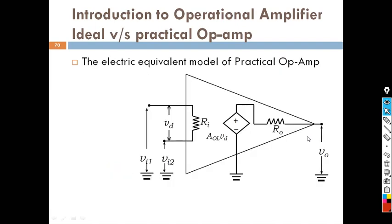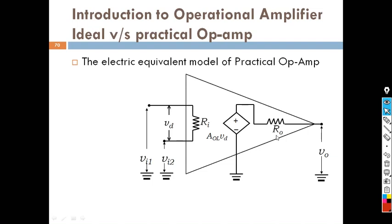This is the circuit diagram for the practical operational amplifier. The operational amplifier will amplify the differential signal. You can see the voltage at the inverting terminal and the voltage at the non-inverting terminal. The operational amplifier amplifies the difference signal, that's why it is called VD. This is the gain block, this is the input impedance between the two terminals, and this is the output impedance of the operational amplifier.